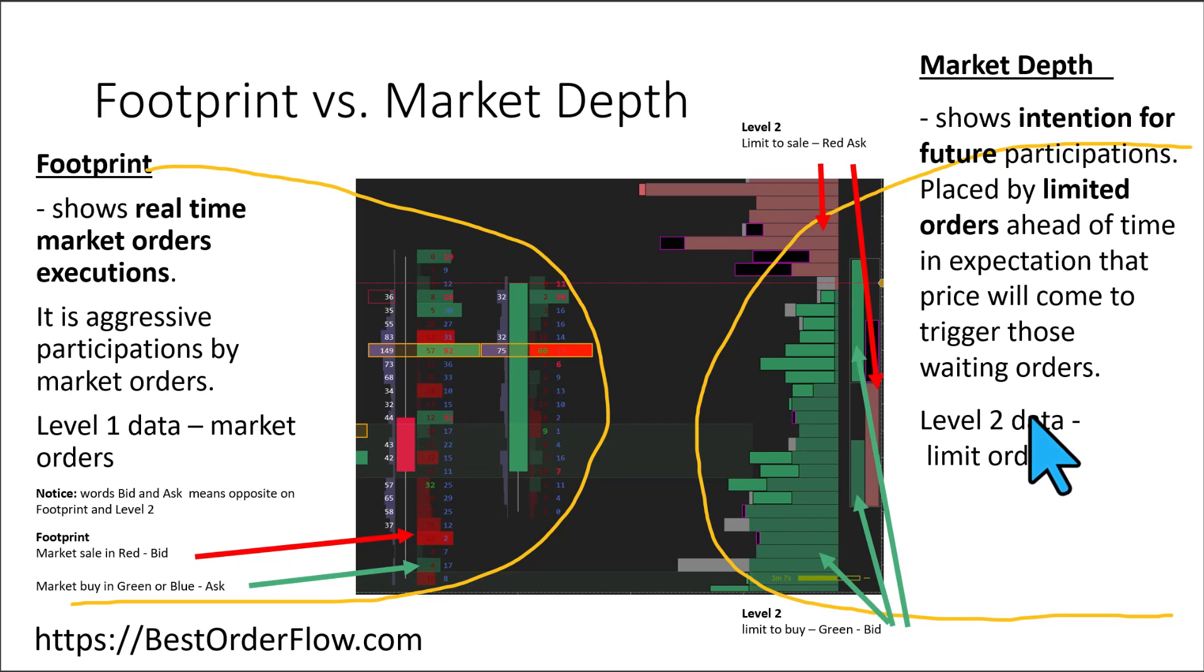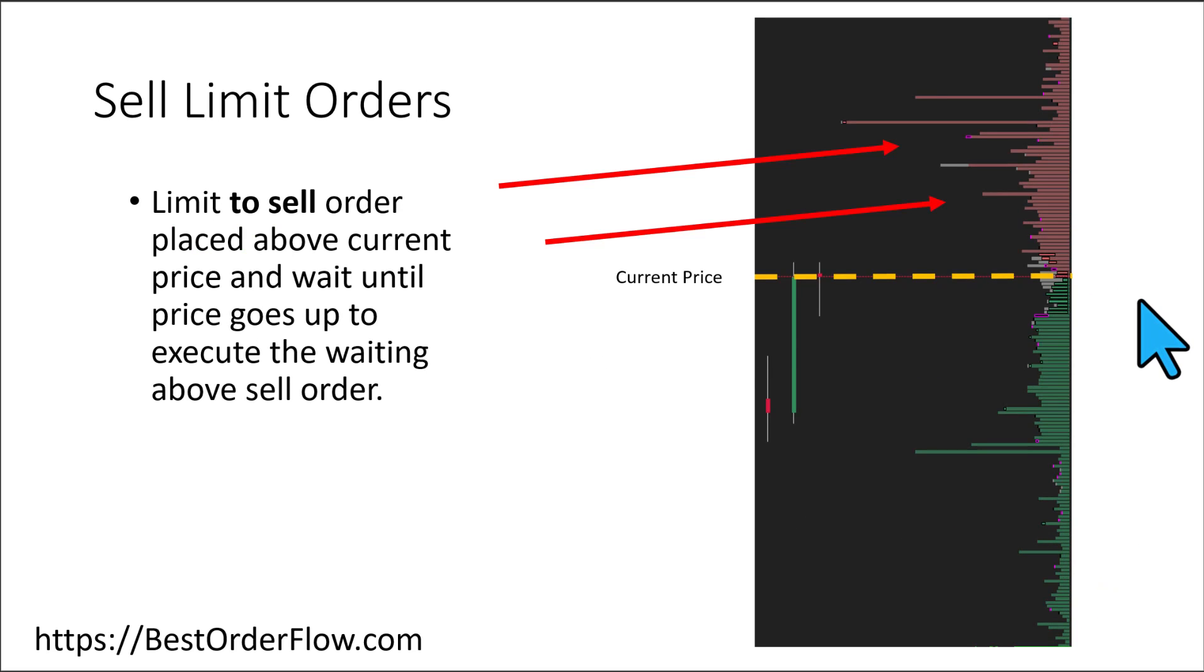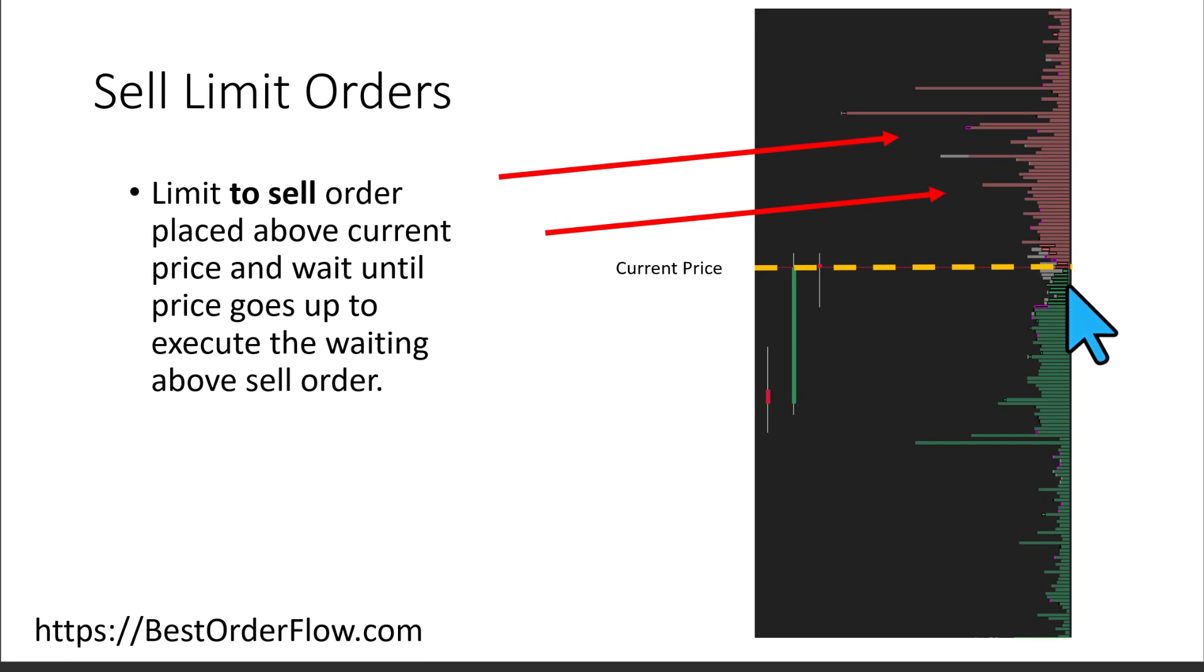This is level two data limit orders. Buy limit orders shown in green are placed below the current price in expectation that price goes down and executes those limit orders. The same relates to sell limit orders sitting and waiting until price approaches from below and triggers them. These are sleeping limit orders, sitting and waiting until price comes and triggers them.